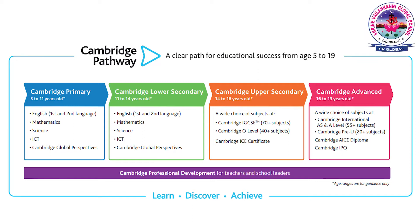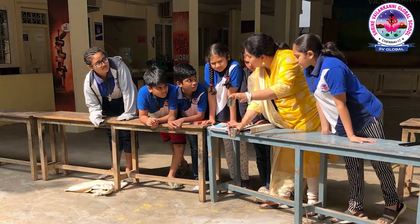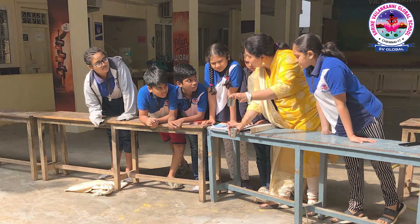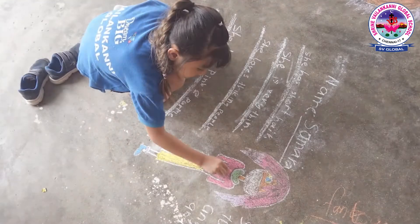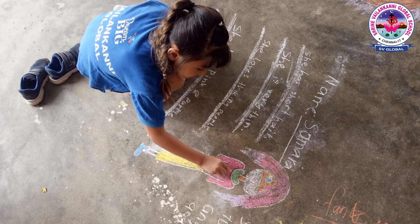At SV Global, the teaching methodologies are highly student-centric. We follow a lot of active learning methodologies like brainstorming, peer questioning, outdoor activities, peer review, and feedback sessions, which are highly oriented towards achieving their learning objectives that are clearly laid down in the beginning of the class and communicated to the children.